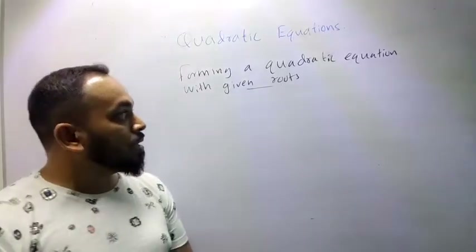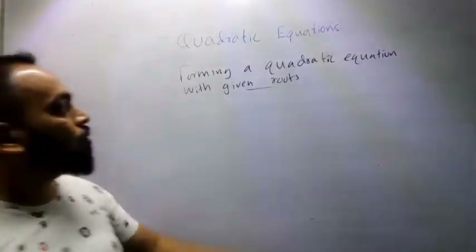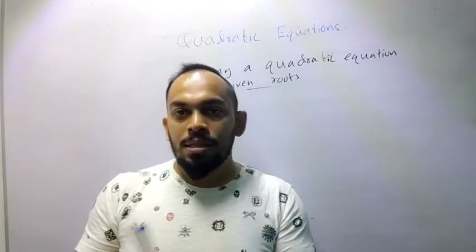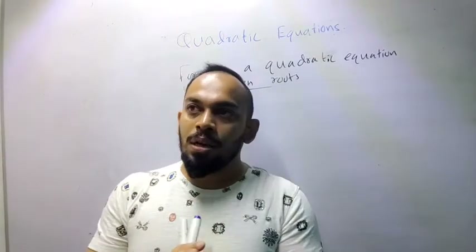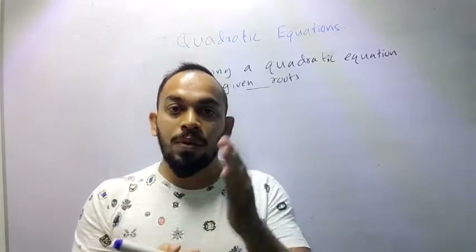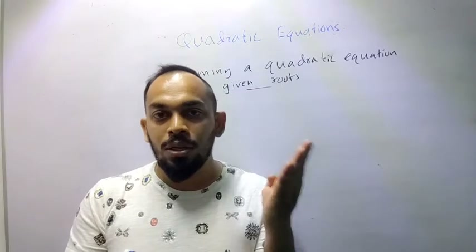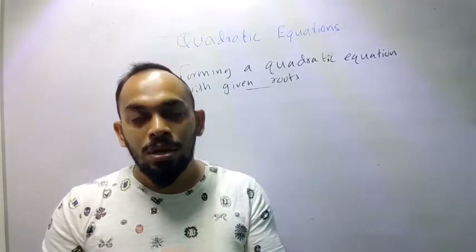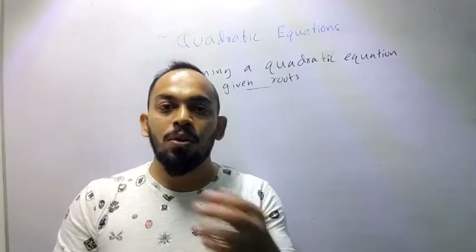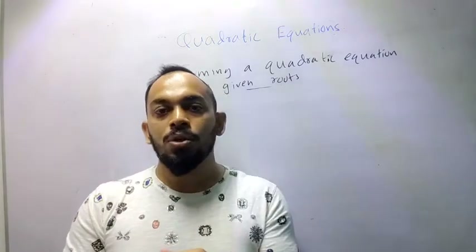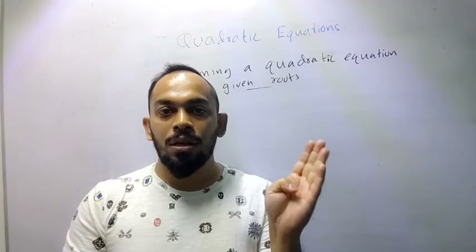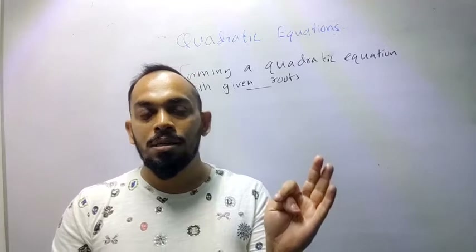The next theory part is forming a quadratic equation with given roots. In earlier cases, we learned that given a quadratic equation, there are three methods to find solutions. We also looked into the nature of solutions — whether they are real, coincident, real distinct, or non-real.